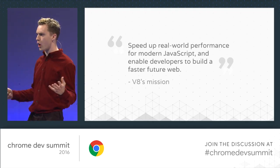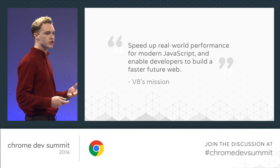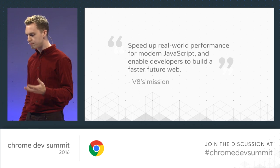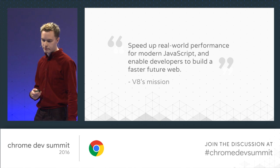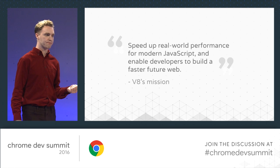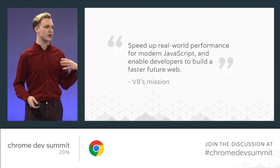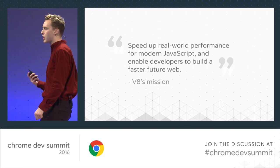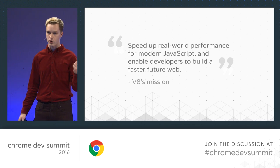So what is V8? V8 is an engine. It's part of Chrome, and it runs JavaScript in web pages. The V8 team has a simple mission: to speed up real-world performance for modern JavaScript and enable developers to build a faster future web. We care about making JavaScript fast that's already on the web, and making it easier to write performant JavaScript — things like our language efforts and standardizing new parts of the ECMAScript language.